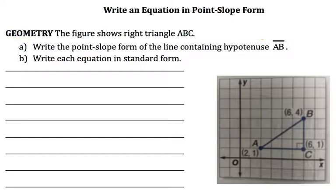So we have triangle ABC here, and for this triangle, we're told to write the point-slope form of the line containing hypotenuse AB. Now, if you're not sure what the hypotenuse is, all you need to remember from way back in the past is that it's the longest side of a right triangle.